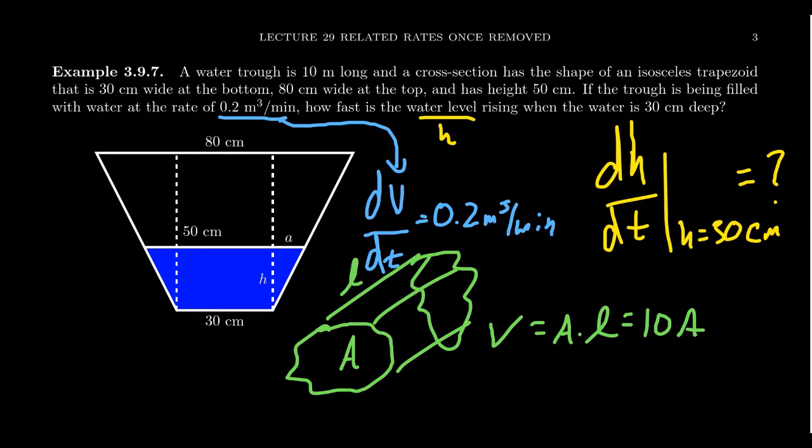One thing I should mention is that you'll notice the volume derivative was being measured in meters cubed per minute. We also have the length in 10 meters. We have these other measurements in centimeters. We need to convert everything to the same length to avoid potential calculational errors. The easiest way is to convert all the centimeters into meters. So instead of 80 centimeters, we get 0.8 meters. Instead of 30 centimeters, 0.3 meters. Instead of 50 centimeters, 0.5 meters.